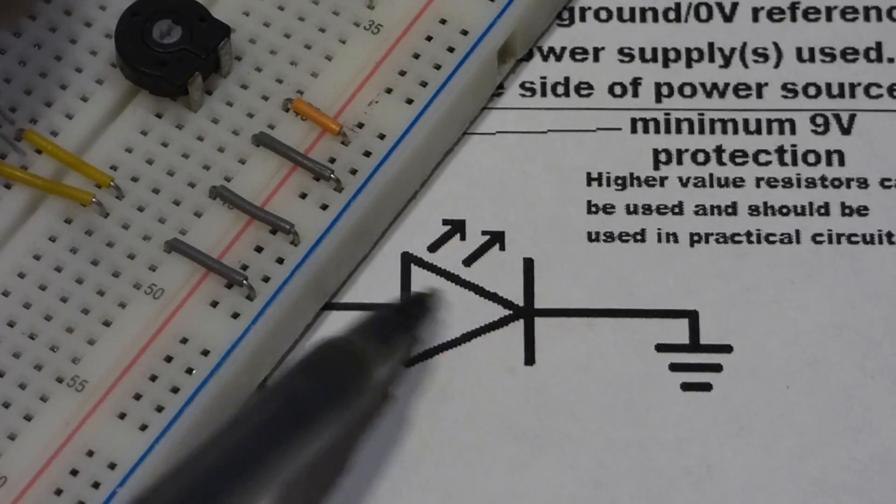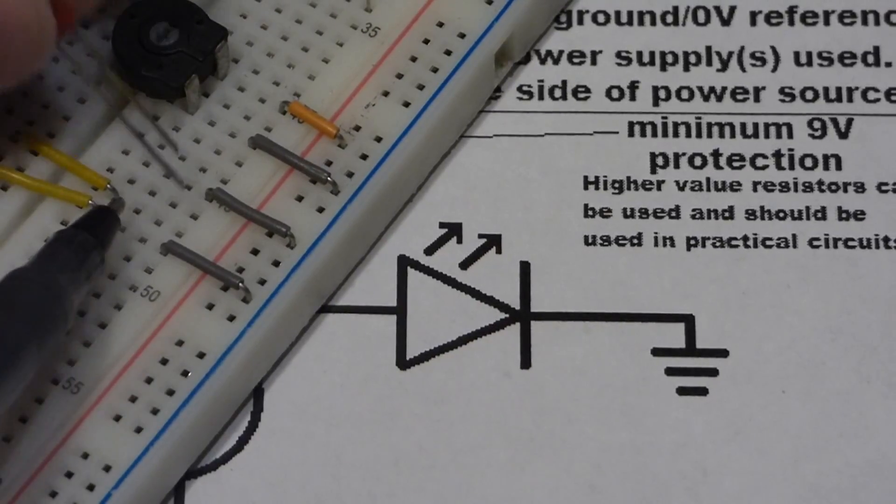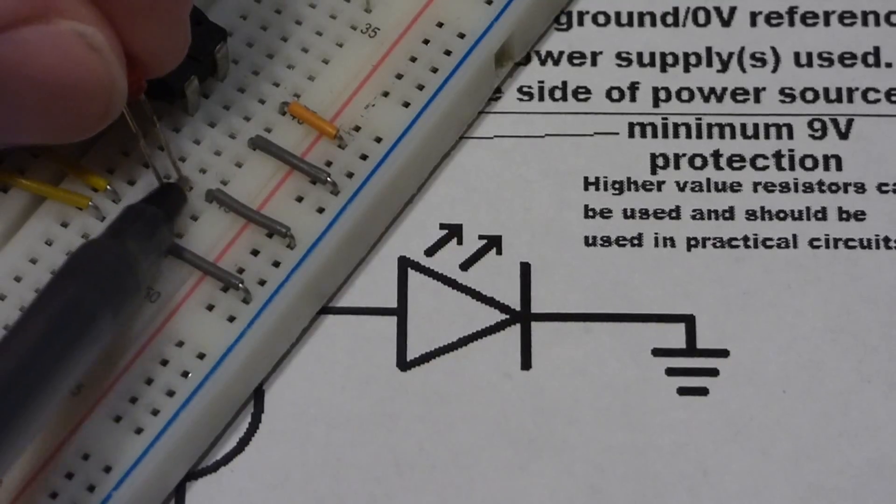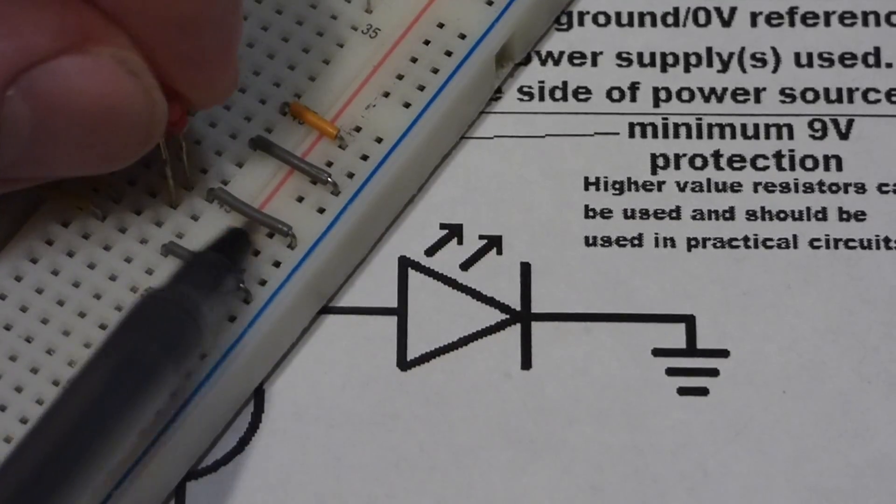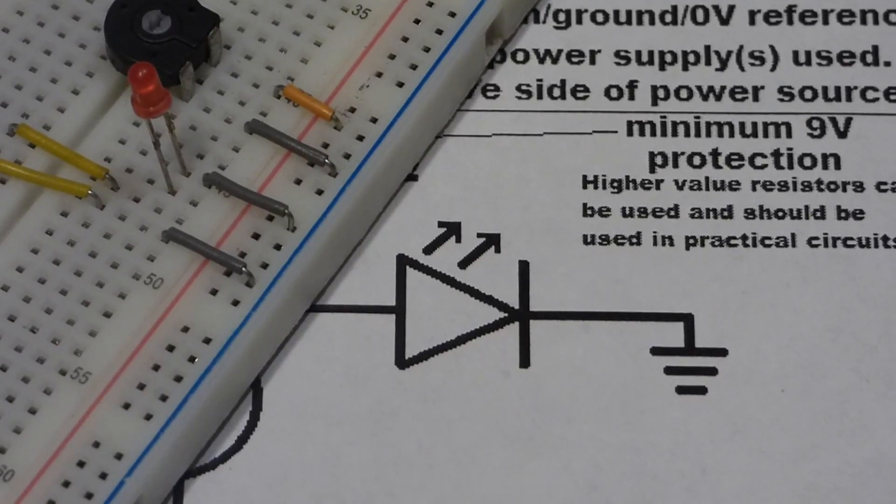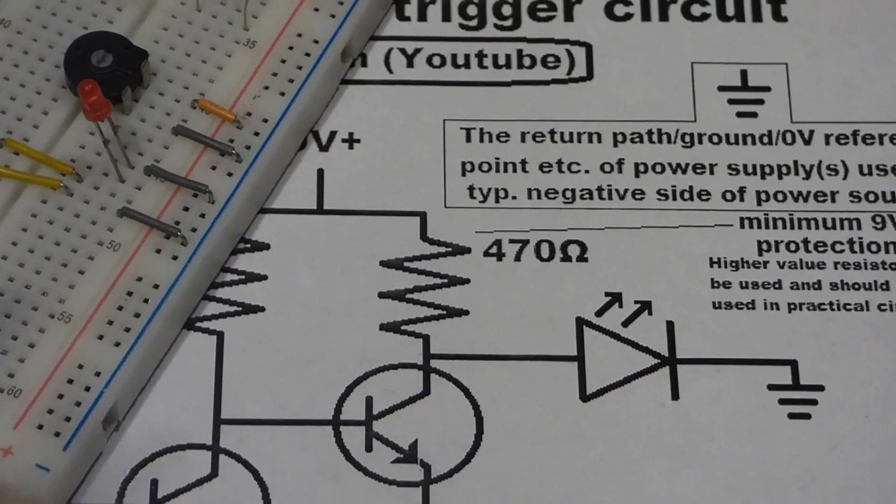If we put this in backwards, it'll block current, and it won't light up no matter what we do. We want the long lead away from ground, the short lead towards ground. We have the short lead connected to this row that goes right to the negative rail. Ground is the negative side of a battery in most DC circuits.